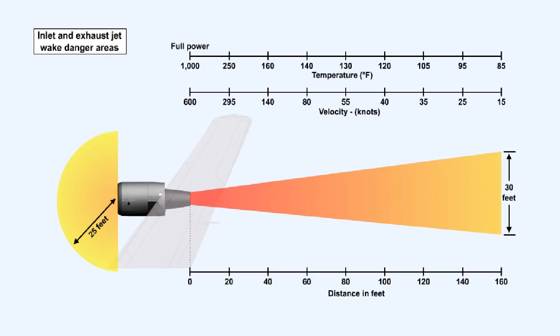The more powerful the engine, the further the zones will extend from the engine. Notice that the gas velocity exiting the engine is extremely high, as is its temperature, although the levels of both drop quite dramatically with increasing distance from the exhaust nozzle.